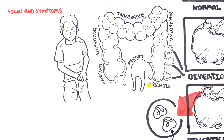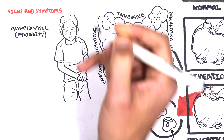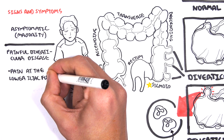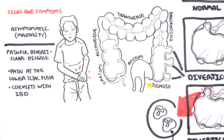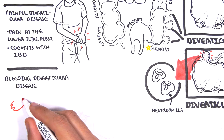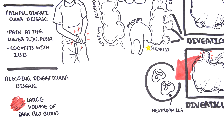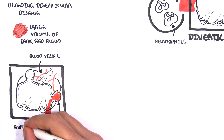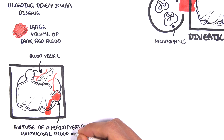The clinical presentation of diverticular disease can be divided into four categories. A majority of people are asymptomatic with no problems. There can be painful diverticular disease — typically pain at the left lower iliac fossa in the sigmoid area, where diverticular disease predominates in western countries. Note that painful diverticular disease often coexists with irritable bowel disease, causing some diagnostic confusion. The third presentation is bleeding diverticular disease, characterized by large volumes of dark red blood. This is caused by rupture of a peridiverticular submucosal blood vessel, resulting in blood entering the lumen and passing out as stool.